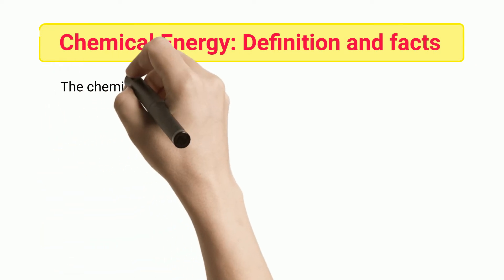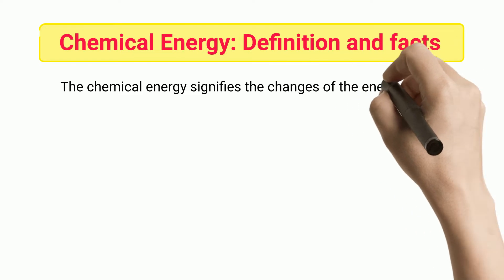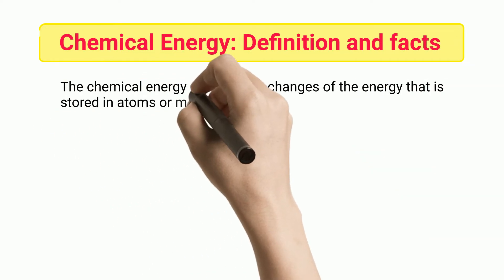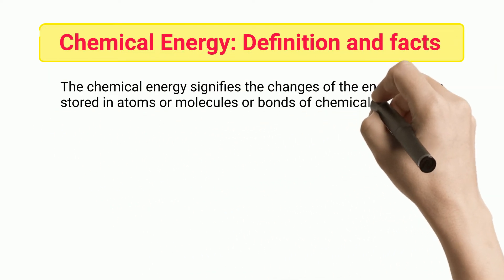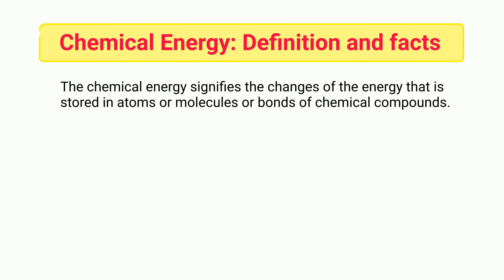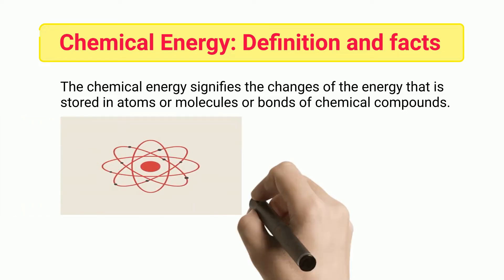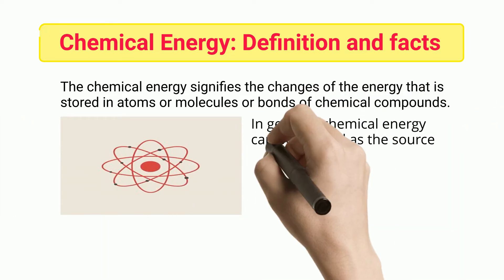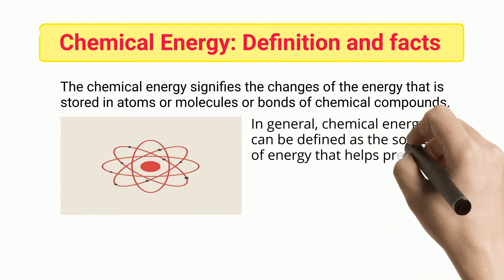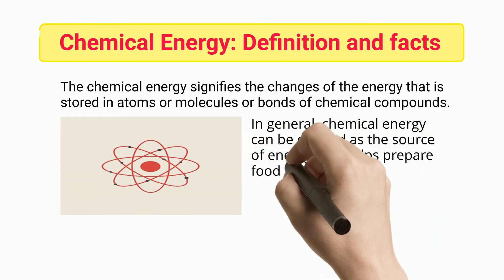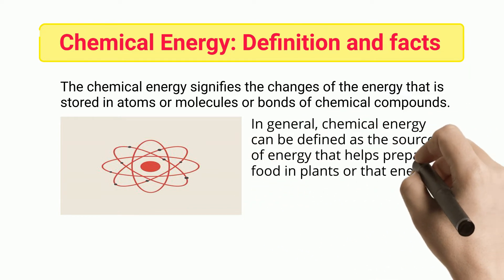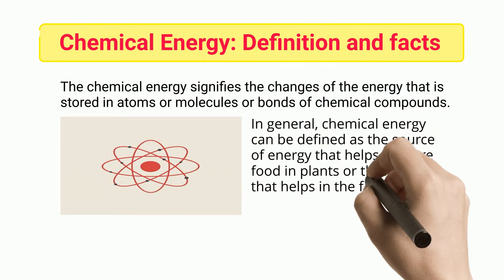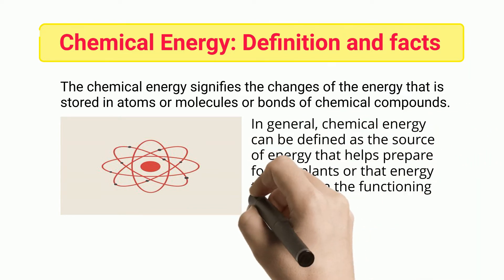Chemical energy signifies the changes of the energy that is stored in atoms, molecules, or bonds of chemical compounds. In general, chemical energy can be defined as the source of energy that helps prepare food in plants, or that energy that helps in the functioning process of the human body.